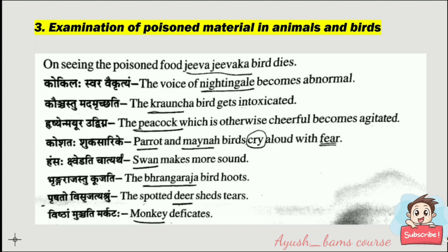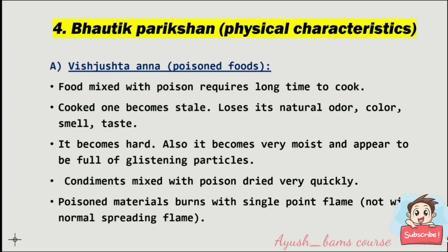Examination of poisoned material in animals and birds: on seeing the poisoned food, the jiva-jivaka bird dies. The voice of the nightingale becomes abnormal. The krauncha bird gets intoxicated. The peacock, which is otherwise cheerful, becomes agitated. Parrots and myna birds cry aloud with fear. The swan makes more sound. The bharangaraja bird hoots. The spotted deer sheds tears and the monkey defecates.